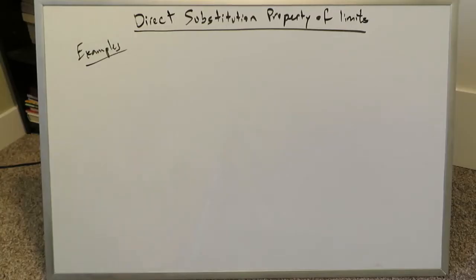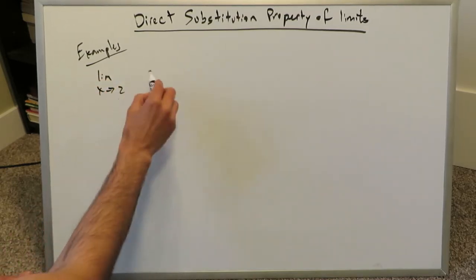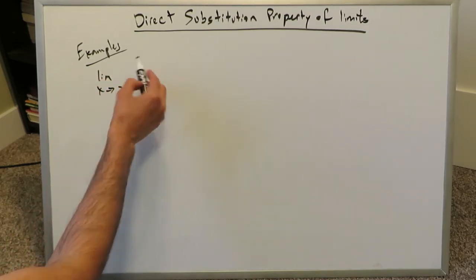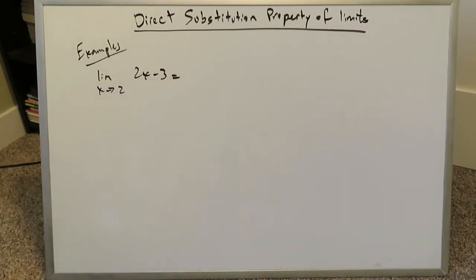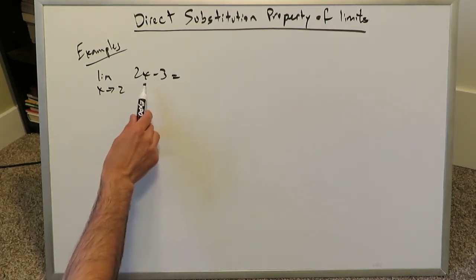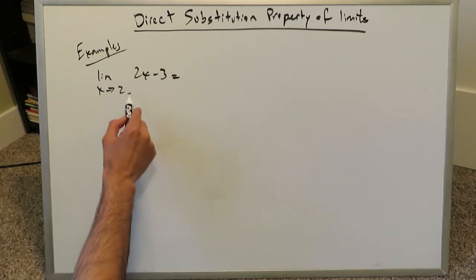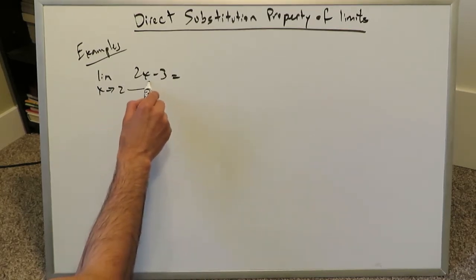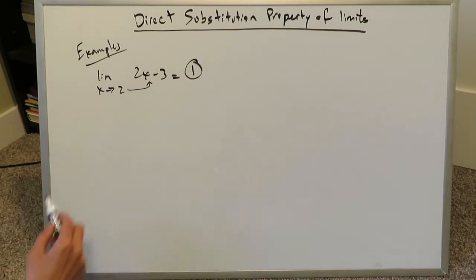Let's take the time right now to examine a quick succession of examples. Limit as x approaches 2, with the function 2x minus 3 — we have to determine what the limit is. The direct substitution property applies very well here because this is a linear function with domain negative infinity to infinity. 2 fits in here, so you can directly substitute 2 and you'll have 1 as your limit.